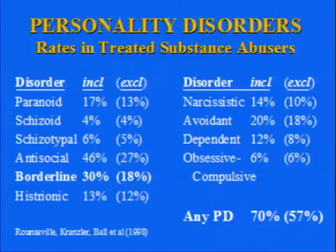Looking across all disorders, the overall rate of personality disorders in the sample was 70% using standard criteria. When the conservative diagnostic method excluding substance-attributable symptoms was applied, the number in parentheses shows the revised rate. For Cluster A and Cluster C disorders, there was almost no impact on prevalence. But for Cluster B disorders — particularly antisocial and borderline, the two most common — there was anywhere between a 12 to almost 20% reduction in prevalence. So the diagnostic method really did matter.